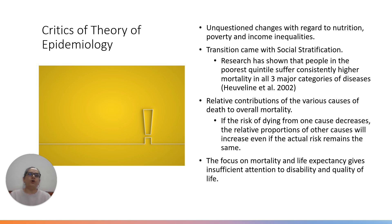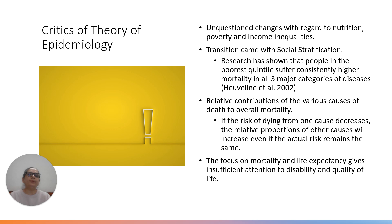The third criticism concerns the relative contribution of various causes. For example, the risk of dying from infectious diseases decreased from pre-modern to modern times, but it might be possible that the risk of dying from cardiovascular diseases was the same in both periods. Since the proportion of infectious diseases got reduced, it appears as if the proportion of cardiovascular diseases increased — but the actual risk may remain the same. The fourth criticism was the focus on mortality and life expectancy as the sole indicators to measure health, with insufficient attention to disability and quality of life.